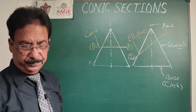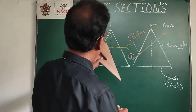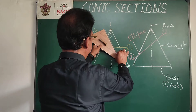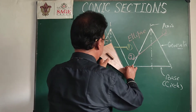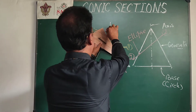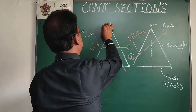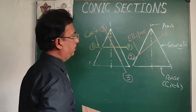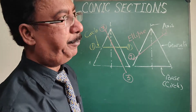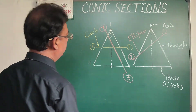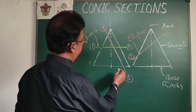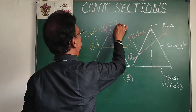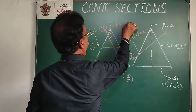The third option is plane number three, where we cut the cone parallel to one of its generators. When the cone is cut by a section plane parallel to one of the generators, the base will also be cut and we will get an open curve — a parabola.